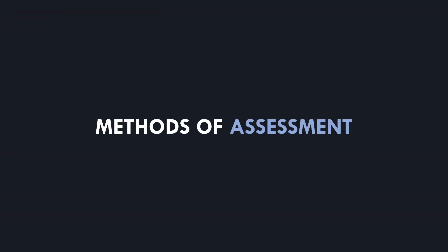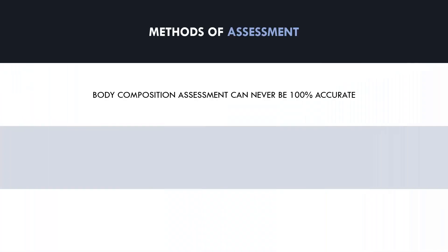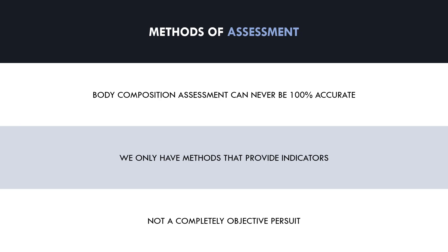Now that we know the two primary tissues relevant for body composition goals, let's explore specifically how body composition can be assessed. We can never assess body composition changes with 100% accuracy — we only have tools that provide indicators. Therefore, it should be understood that the process of improving body composition is not a completely objective pursuit. We have multiple methods of assessment which we will now cover.